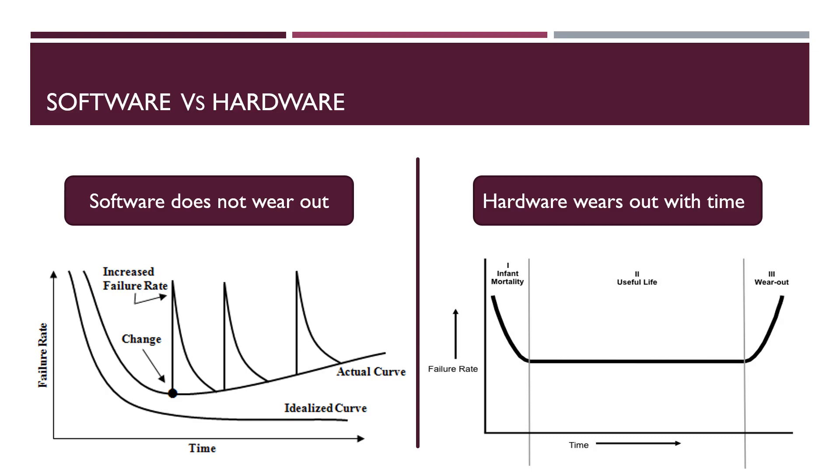When we see failure rate versus time graph of software, initially, failure rate is high due to defects. And we corrected these defects. Then, the failure rate is reduced and fixed. But this is idealized curve. And it never happens in real life scenario. The actual curve is drawn above idealized curve.